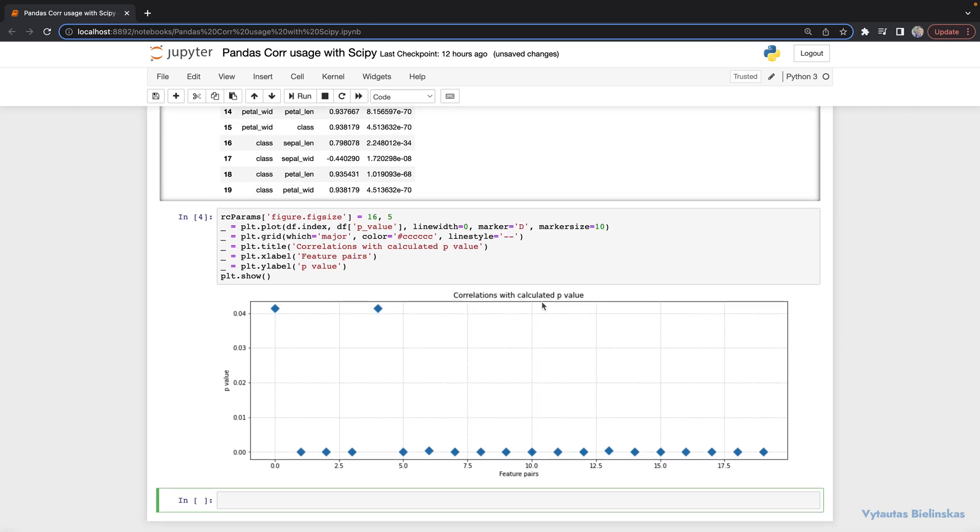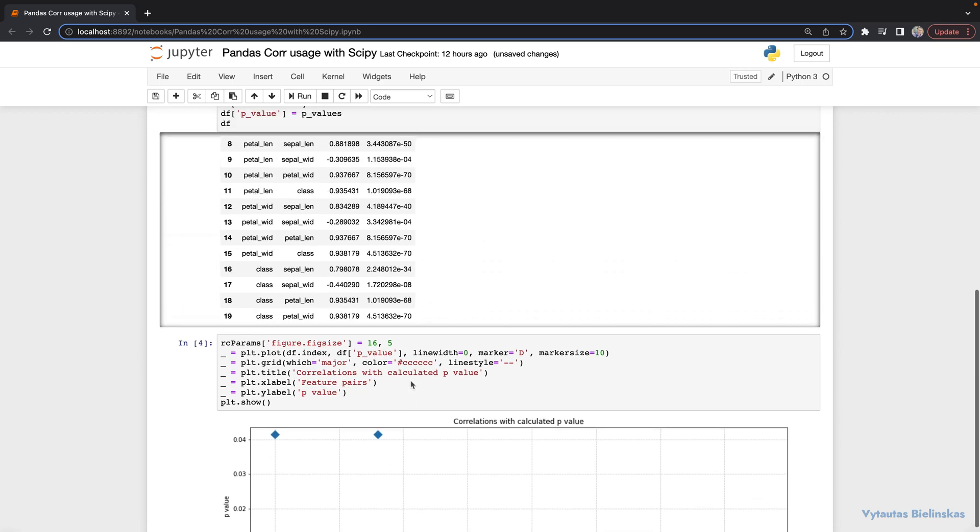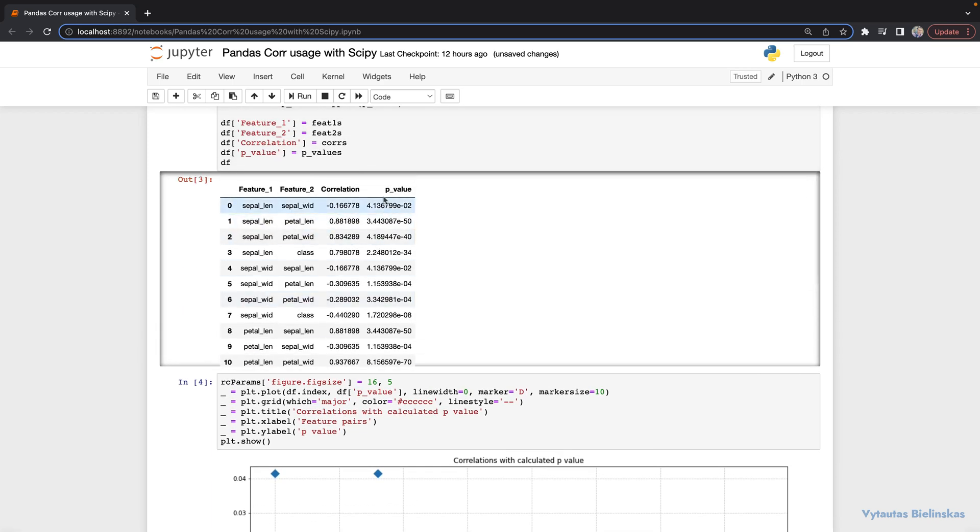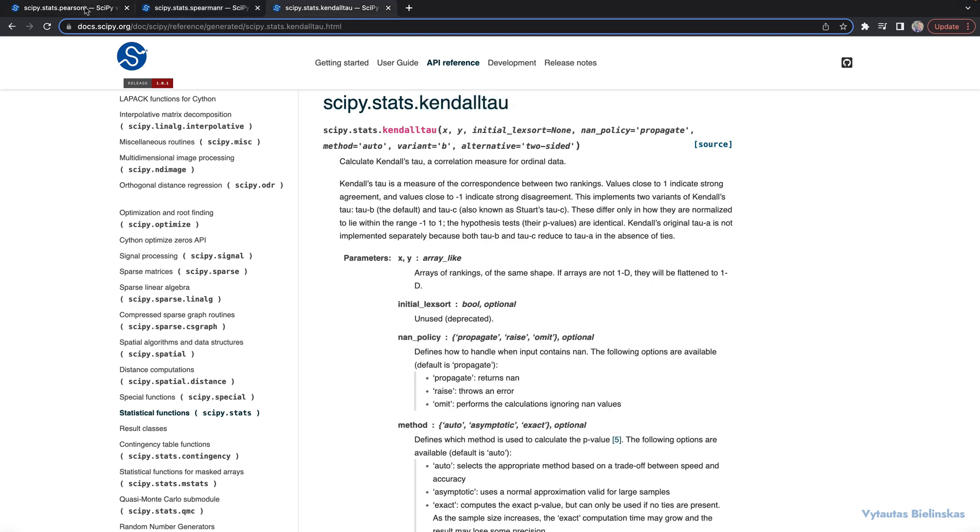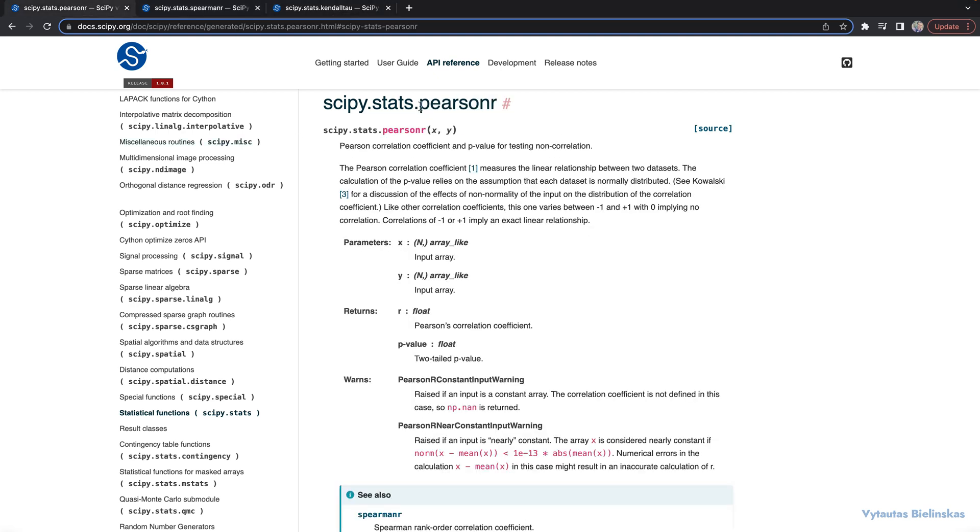In conclusion, for correlation tests on data samples, which is often what you will be working on, always calculate the p-values as well. As such, when working with sample data, go to scipy.stats over the pandas dataframe core.